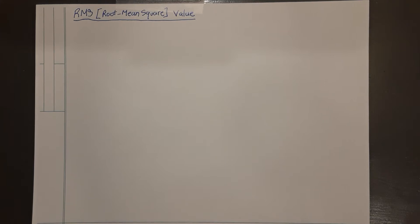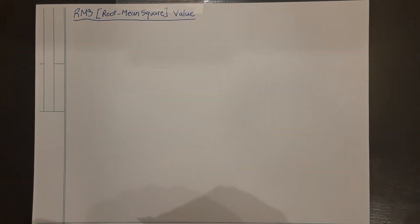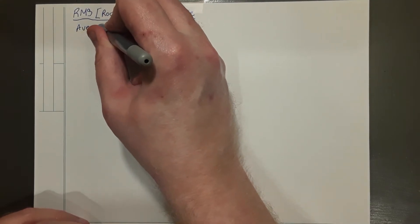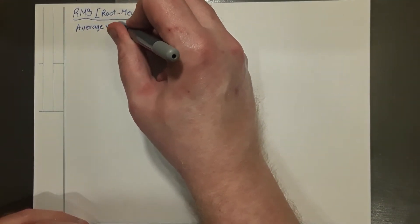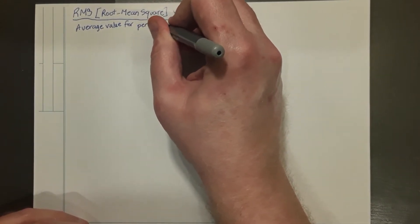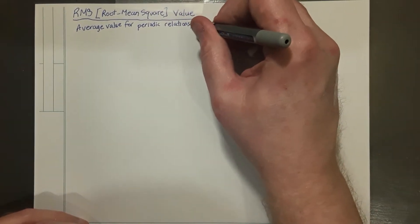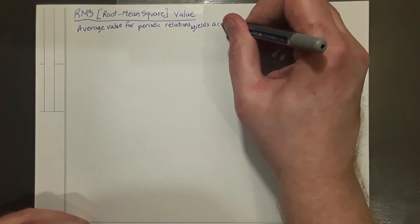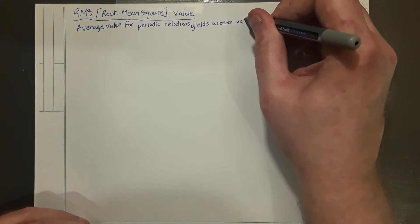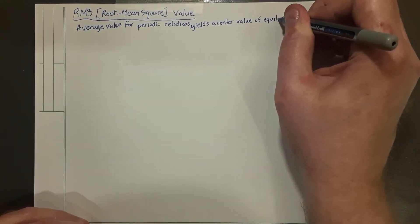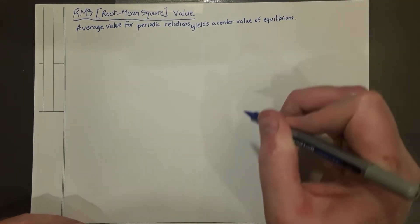This video will introduce the concept of the root mean square value and how to calculate it with integration. The problem with average value is that when you try to use it for a periodic function, it doesn't give a lot of useful information. When you try to use average value for periodic relations, it usually gives you a center value of equilibrium, which isn't all that useful.